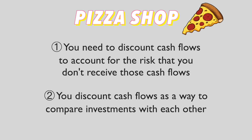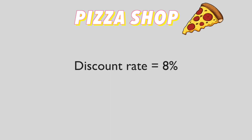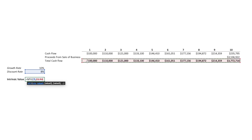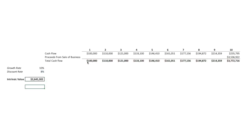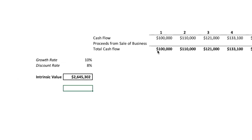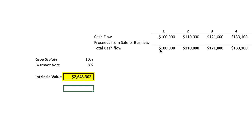Additionally, you discount cash flows as a way to compare investments with each other. If you could put your money in an insured savings account and receive a 5% return with no risk, you're going to need a return significantly higher on this investment to justify buying the pizza shop. In this example, we use 8% as our discount rate. After you discount these cash flows, you can add up the discounted values to determine the intrinsic or true value of the business. In our example, the intrinsic value of the pizza shop is $2,645,302.